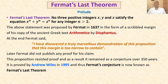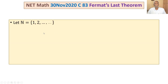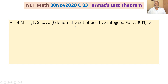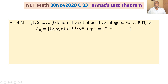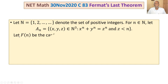Let's now get into the problem. Let N be the set of positive integers. For n belonging to N, let A_n be the set of ordered pairs (x, y, z) belonging to N^3 such that x^n + y^n = z^n and z is less than n. Let F(n) be the cardinality of the set A_n.